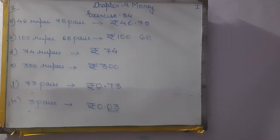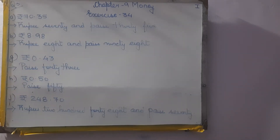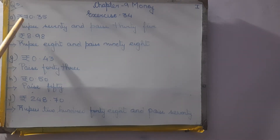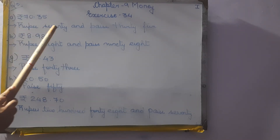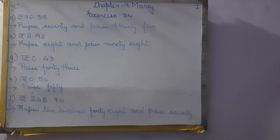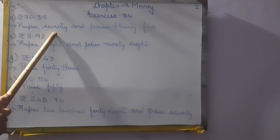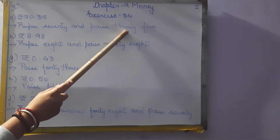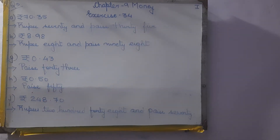Coming to third question: Write the following amount in words. There are also 12 questions in which we are going to do E, F, I and L. First one: Rupees 70.35. So we write rupees seventy and paise thirty-five. Rupees 70 and paise 35.